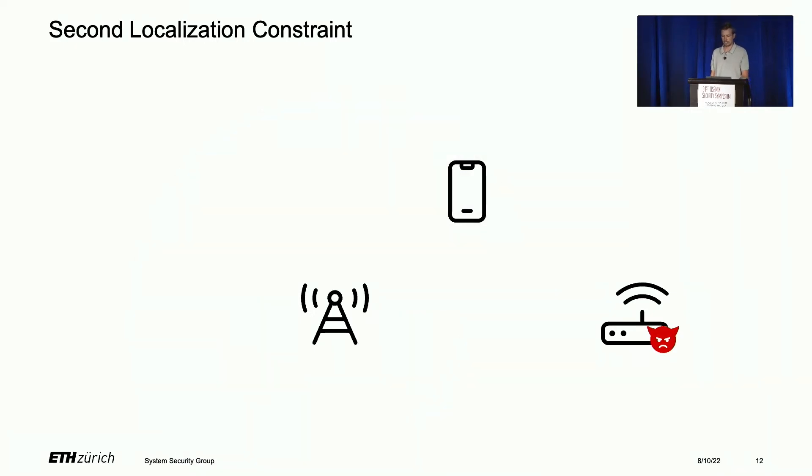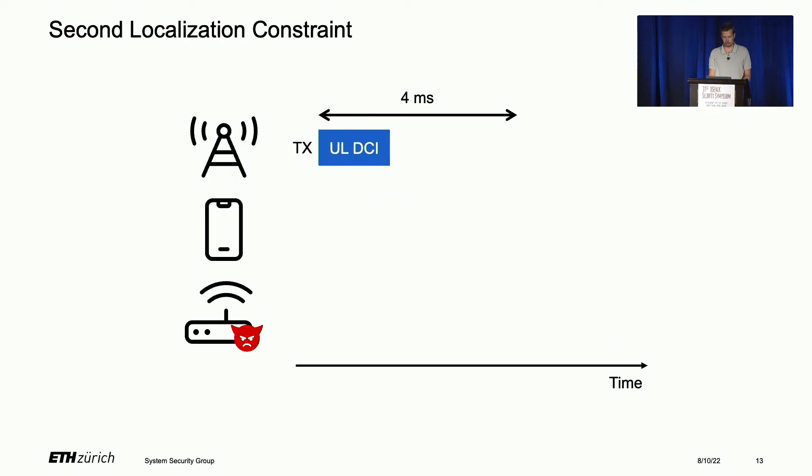The second localization constraint is due to propagation delays. The base station sends the uplink DCI, and the phone replies with uplink data. Because our sniffer can sniff both the uplink DCI and the uplink data, it can infer from this delay an ellipse with two focal points at the base station and the sniffer. The shape of the ellipse is inferred from this propagation delay. The uplink DCI is sent by the base station and arrives with some propagation delay at the phone. The sniffer knows exactly when the uplink DCI was sent because it knows its own location and the base station location, and therefore knows the propagation delay between these two entities.